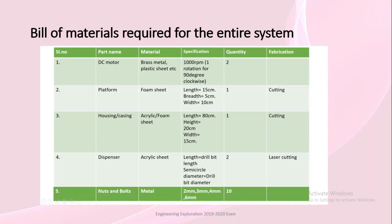Next we have the bill of materials. We will be using two DC motors made of brass metal with a specification of 1000 rpm and one rotation of 90 degrees clockwise. A platform made of foam sheet with dimensions 15 x 5 x 10 cm, fabricated by cutting. Housing or casing made of acrylic or foam sheet with dimensions 80 x 20 x 15 cm, fabricated by cutting. Two dispensers made of acrylic sheet with length equal to the drill bit length and diameter equal to the drill bit diameter, fabricated by laser cutting. And 10 nuts and bolts made of metal in dimensions of 2mm, 3mm, 4mm, and 6mm.